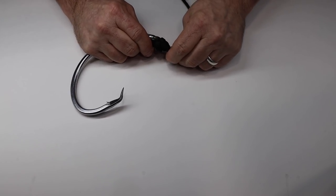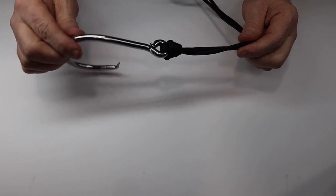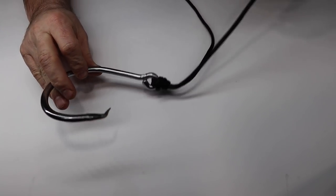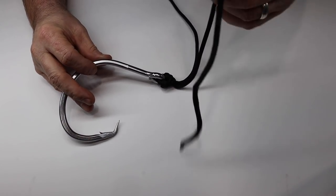You can spit on it, you can stick it in the water. Just lubricate it because any monofilament type of line does not react good to heat. So when you pull it down tight, it can stretch it, which will make your line weak.